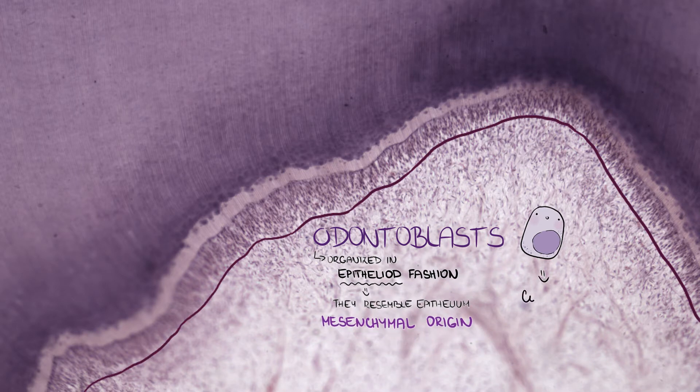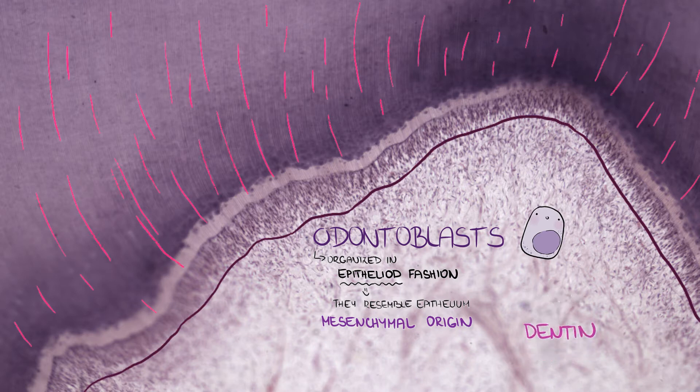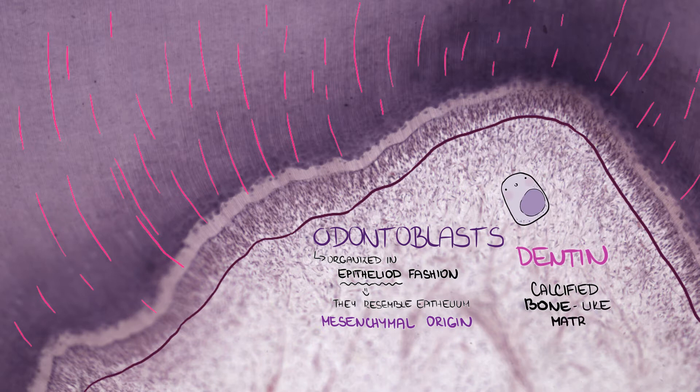They produce collagen, glycosaminoglycans, and other organic compounds of dentin, which is a calcified bone-like matrix. It contains a large amount of hydroxyapatite crystals, ensuring its hardness, which is higher than bone.